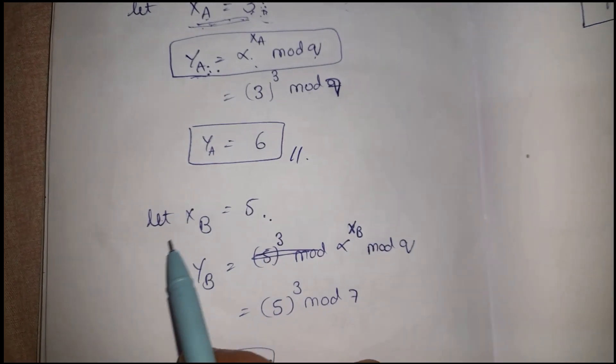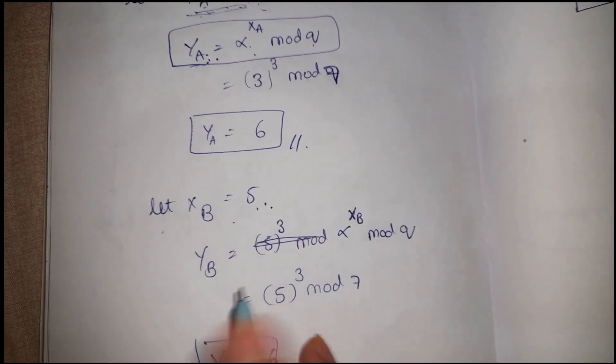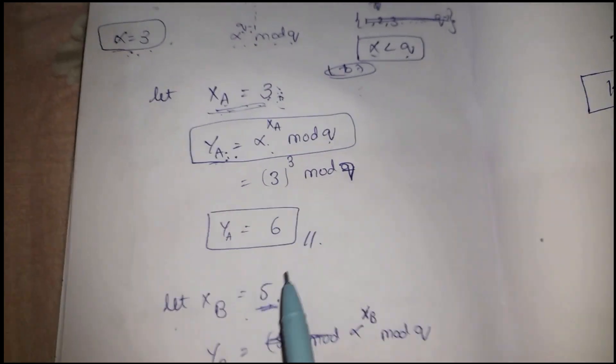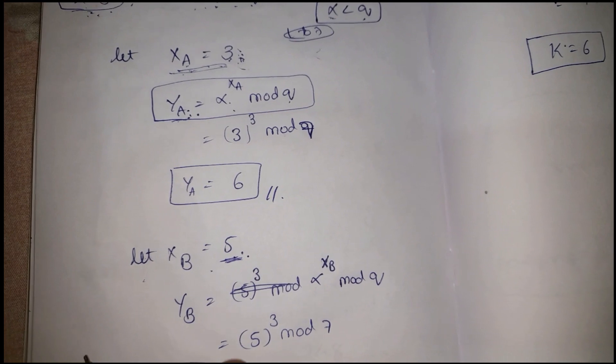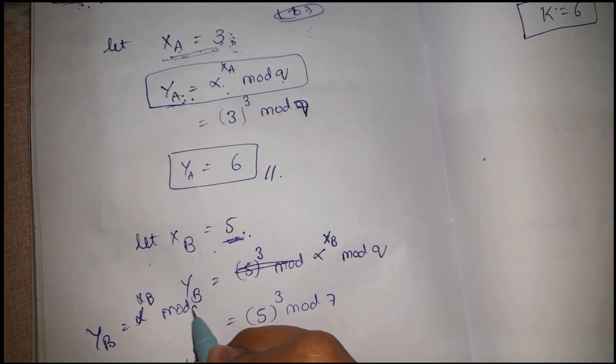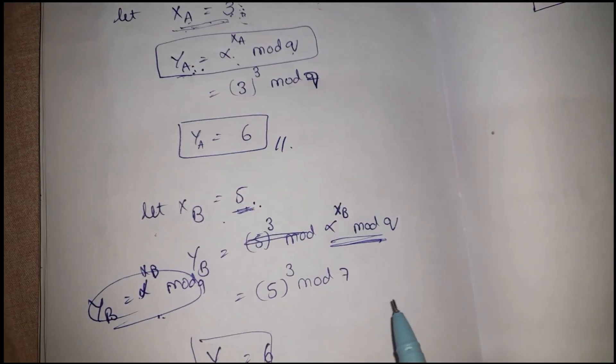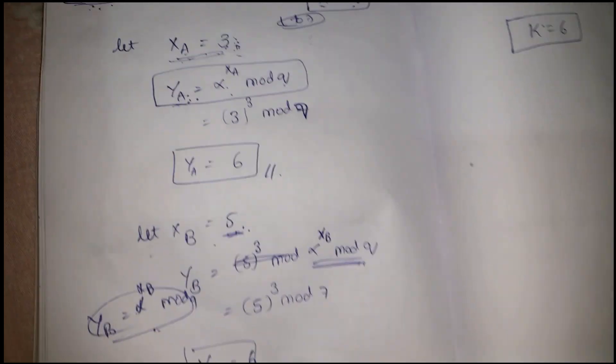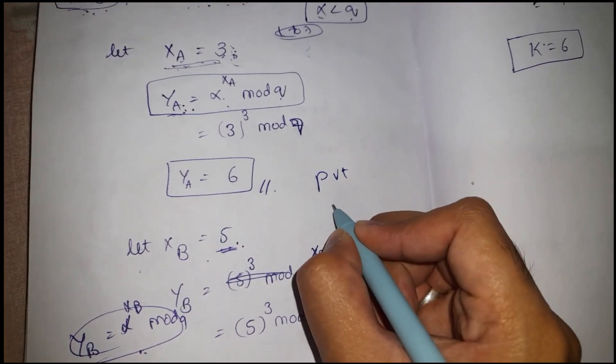Now I have taken the private key of B as 5. You can take any number as I said. We need to calculate the public key based on the private key and this alpha value. How can I calculate? In the same way: YB is equal to alpha^XB mod q. This is the formula. After simplifying this, I will get the public key for B as 6. Now we have obtained our private and public keys.